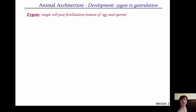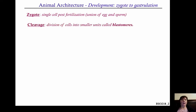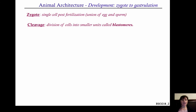Beginning with the very first step: the union of egg and sperm results in a zygote. After that initial zygote — that single cell forms — it will go through several different cell divisions that are referred to as cleavage stages, at least in the very beginning. When the cell divides and duplicates itself, those initial cells are referred to as blastomeres.